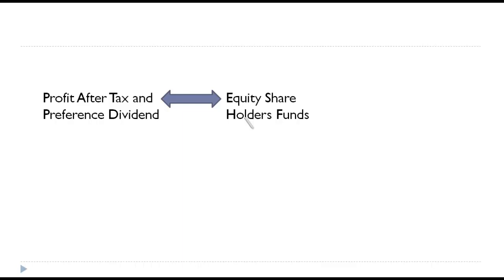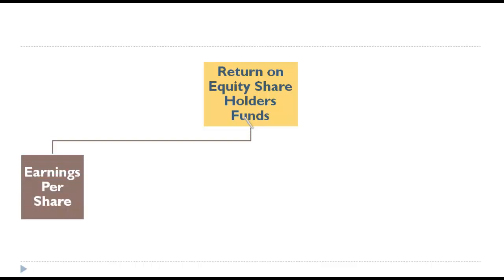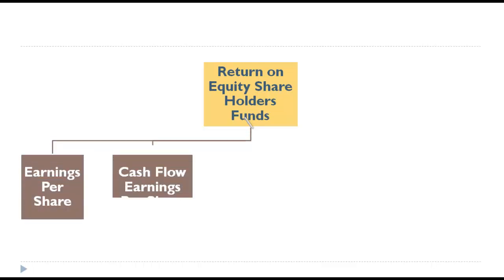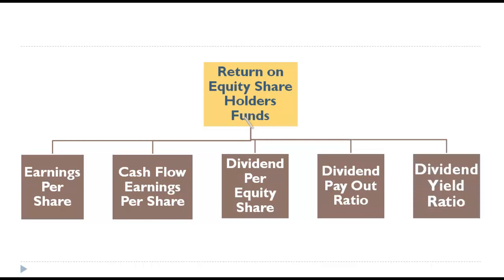This ratio is calculated as: profit after tax minus preference dividend, divided by equity shareholder funds. It is also called return on equity shareholder funds. There are five classifications under this: (1) earnings per share, (2) cash flow earnings per share, (3) dividend per equity share, (4) dividend payout ratio, and (5) dividend yield ratio. Each ratio will be covered in subsequent sessions.